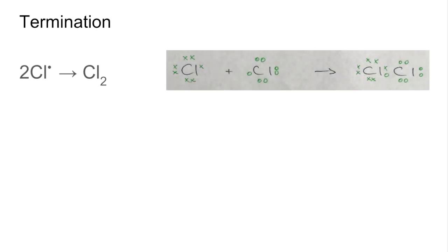There's more than one possible termination step because basically any two free radicals can combine to form a non-radical substance. So the options for this one are two chlorine radicals combining to form a chlorine molecule. So there's the dot and cross diagram for that.